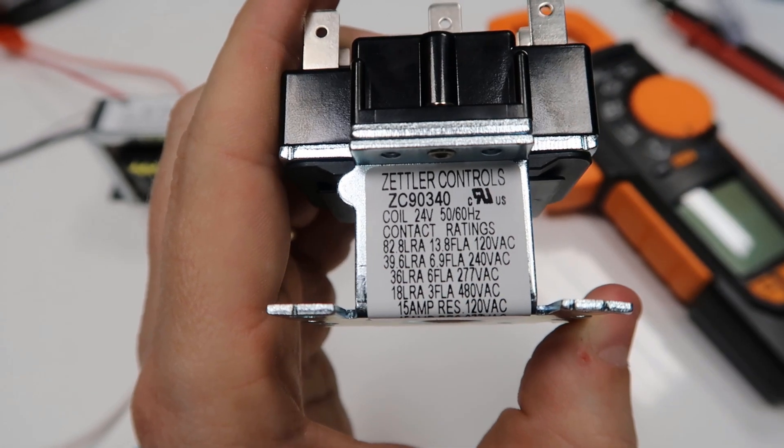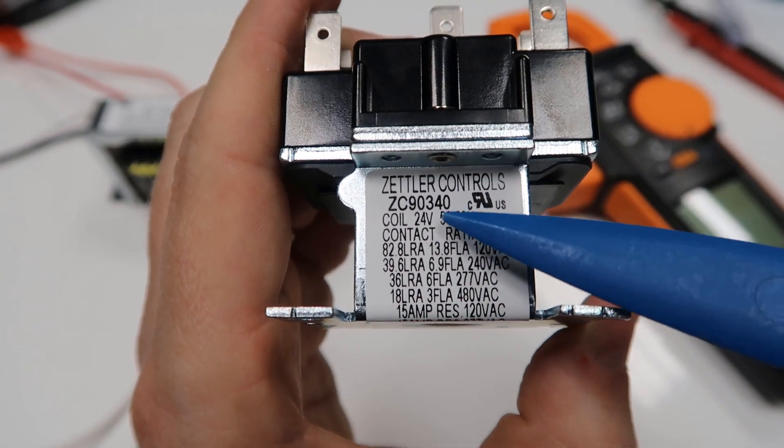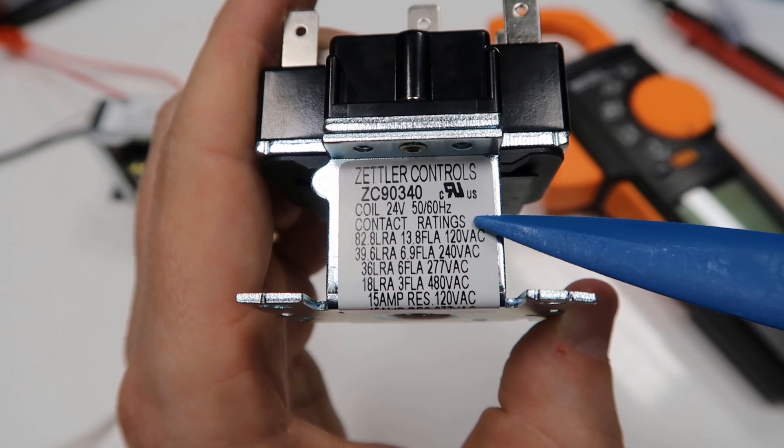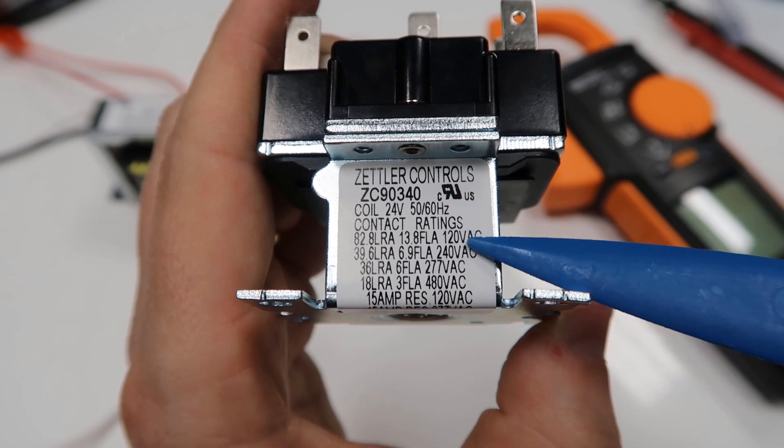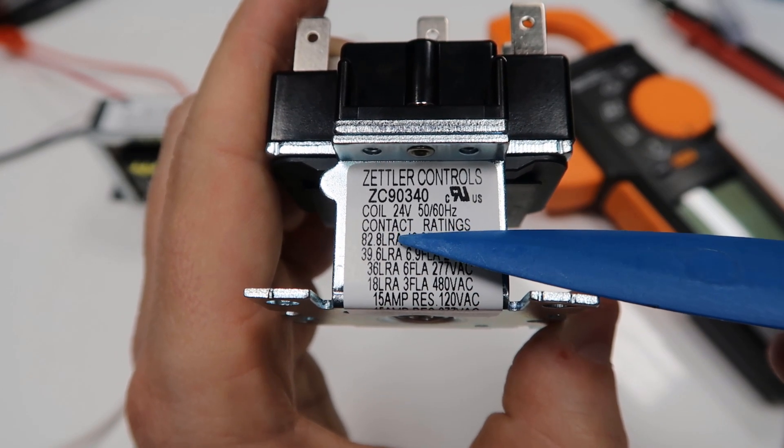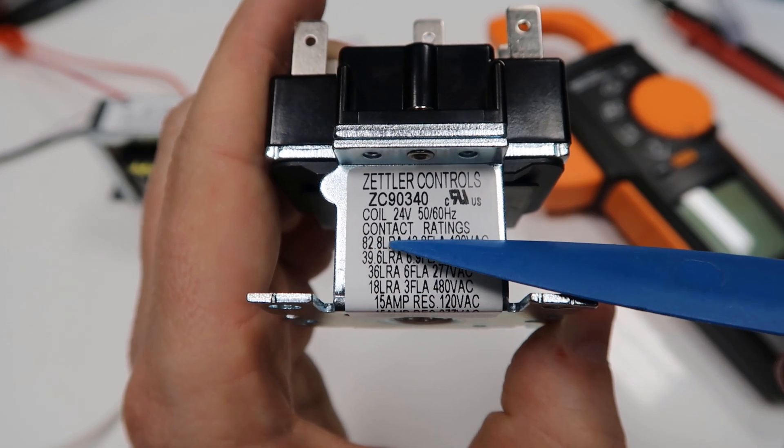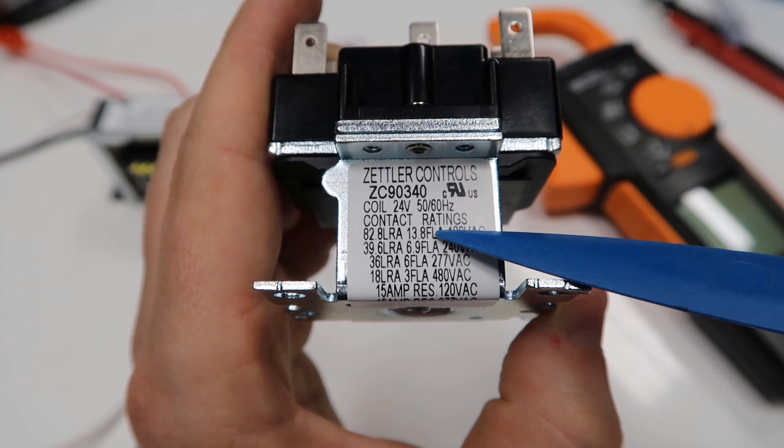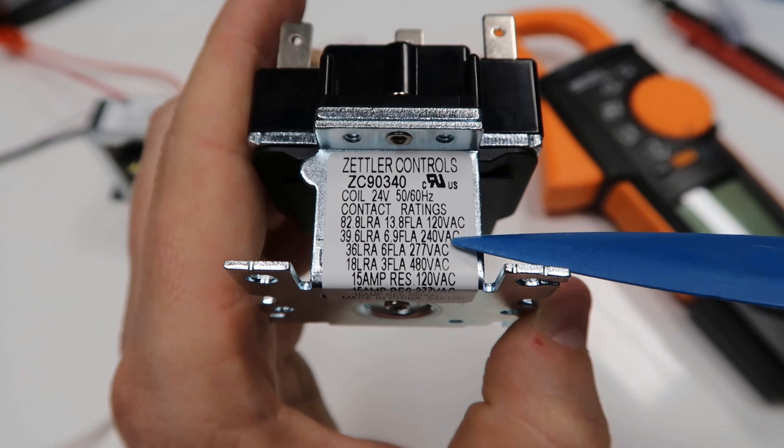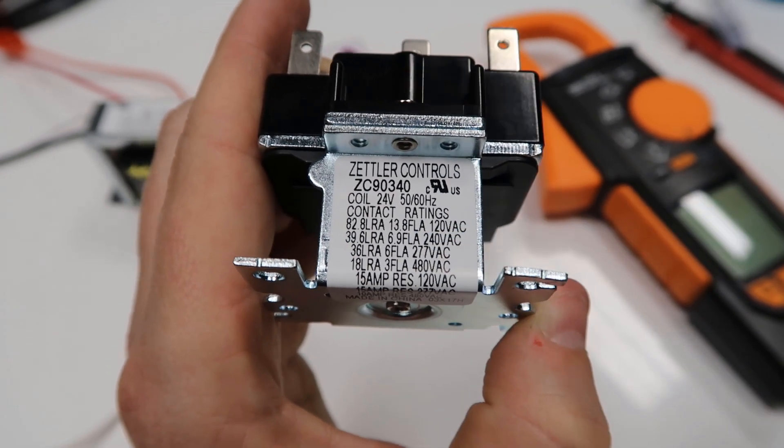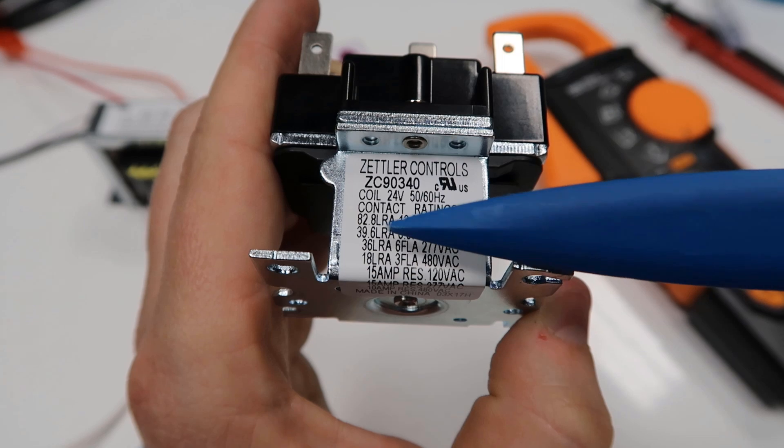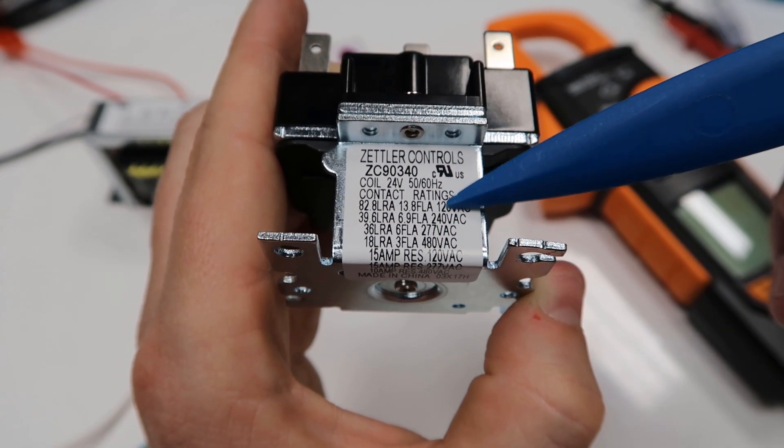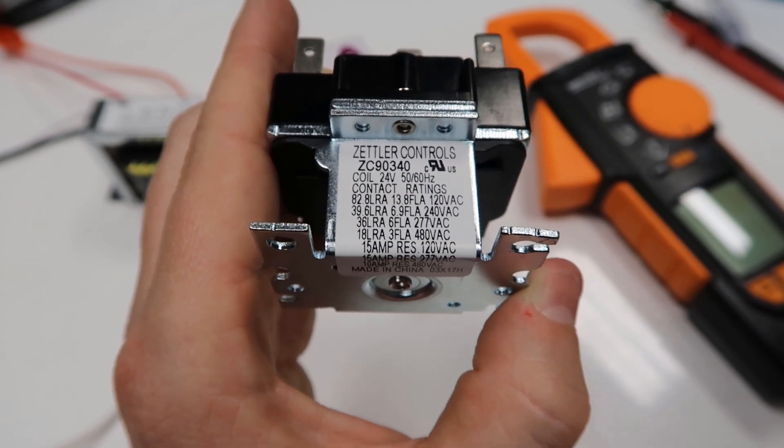If you look at this data tag here, you'll see the coil is rated at 24 volts, but then we have contact ratings. This is the ampacity, what is the amp capacity of this relay? At 120 volts, it can have 82.8 locked rotor amps. That's that instantaneous power that a motor uses when it first starts up or when it's locked. And then 13.8 full load amps at 120 volts. When you go to 240 volts, that drops down to 6.9 full load amps and 39.6 locked rotor amps. These are for motor loads or inductive loads, magnetic loads, generally motors.